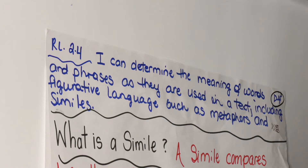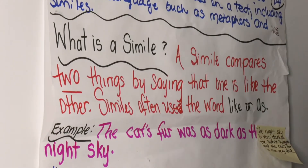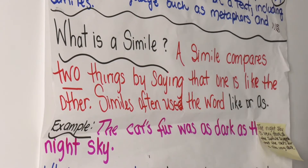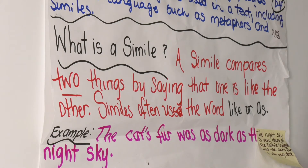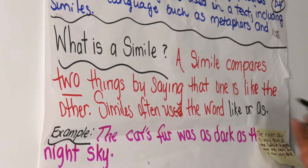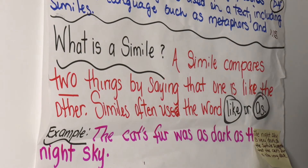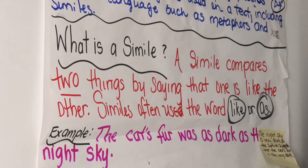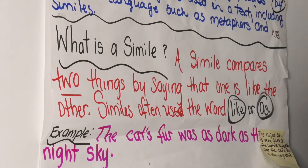What is a simile? Can anybody tell me? I see Kayla. Kayla, what is a simile? Right, Kayla — you said a simile compares two things by saying that one is like the other. Similes often use the words 'like' or 'as.' You want to jot that down in your notebook, boys and girls? Go ahead and write: a simile equals 'like' or 'as.' It often uses those words.